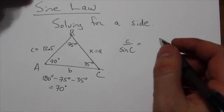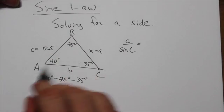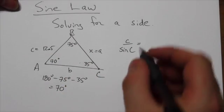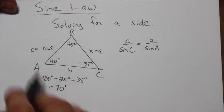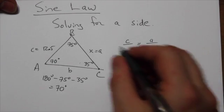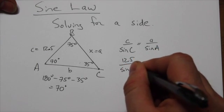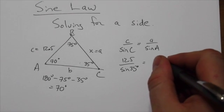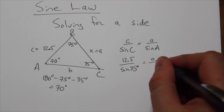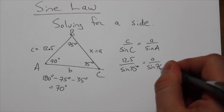So now we come over here and we know that we've got at least part of that a, little a, big A pair here. So we'll put little a up here, sine of A. And now we'll plug in what we know. We know that little c is 12.5. We know that angle C is 35 degrees. And we know, I'm sorry, we're looking for little a. And we know that the sine, or sorry, that angle A is 70 degrees.